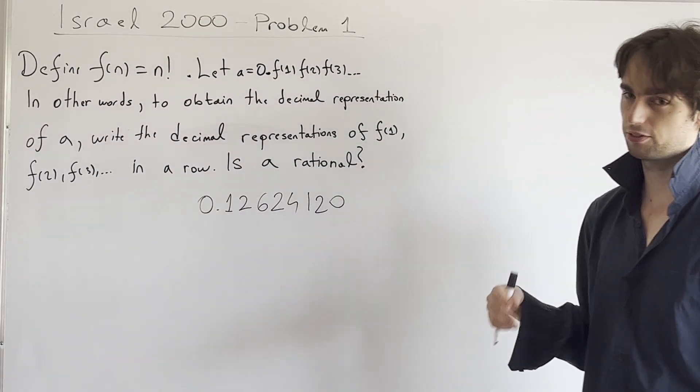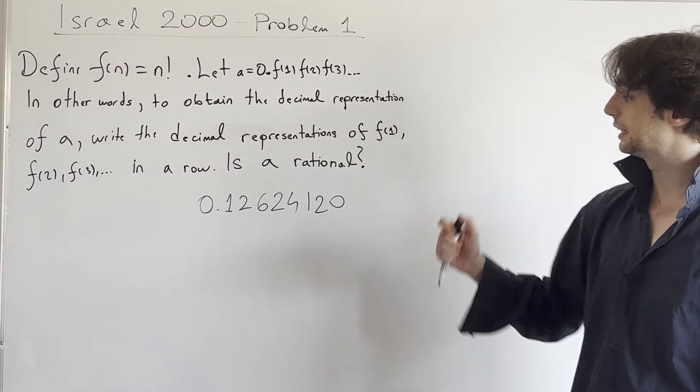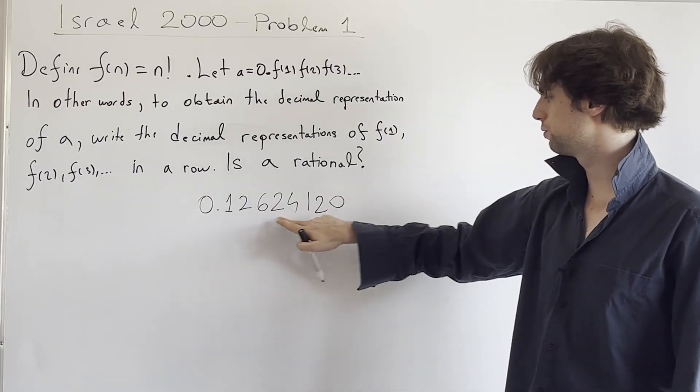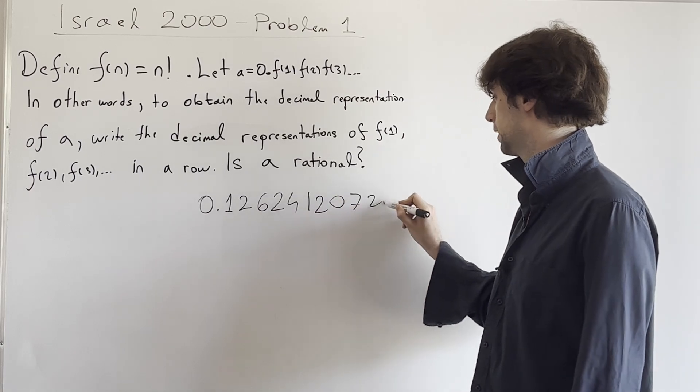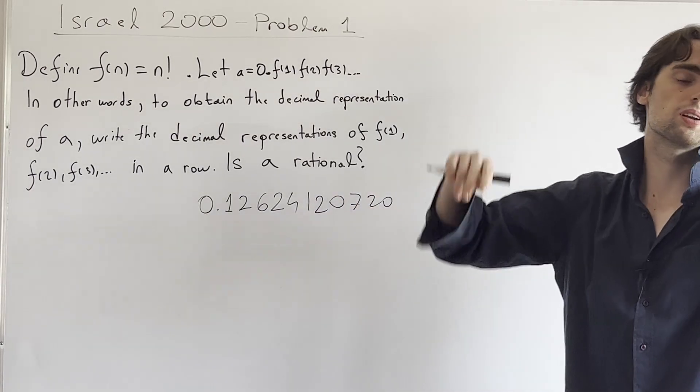Like we have 5 factorial, which is actually 1, 2, 3, 4, 5, then we have 6 factorial, which is 720, and then 8, and so on and so forth. Right?